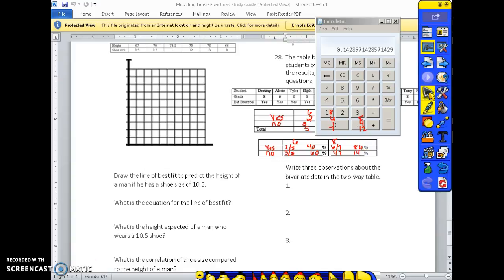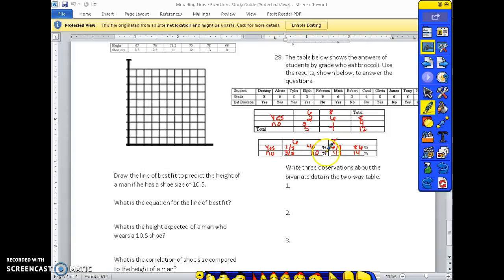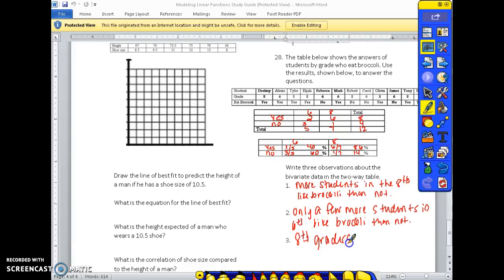Write three observations about bivariate data into a table. So, three observations. We can observe that there are more students in the eighth grade like broccoli than not. It's very close for sixth graders. Only a few more students in sixth grade like broccoli. And between eighth grade and sixth grade, eighth graders like broccoli more.